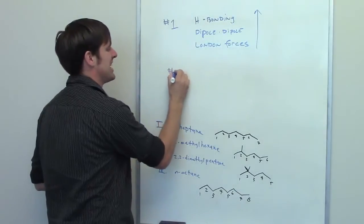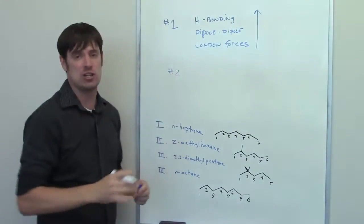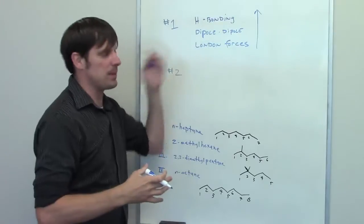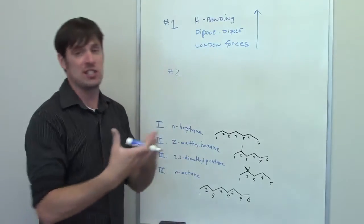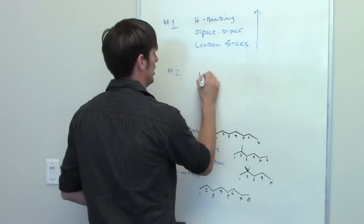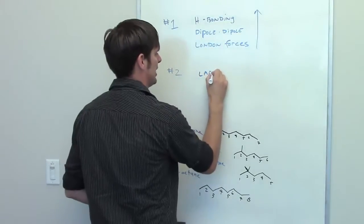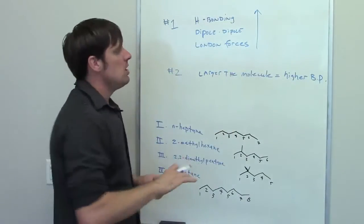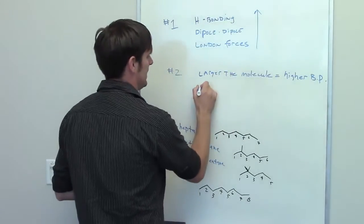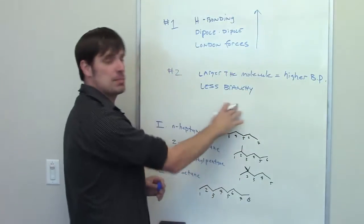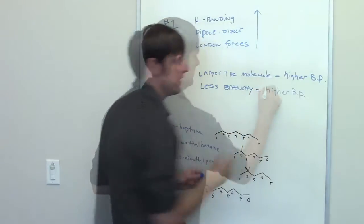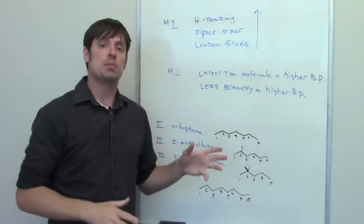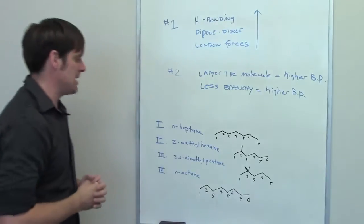We have to focus on size and branchiness. Generally speaking, if the type of intermolecular force is the same, the larger the molecule, the higher the boiling point. Also, generally speaking, the less branchy the molecule, the higher the boiling point. I'll explain why as we move down to these examples.